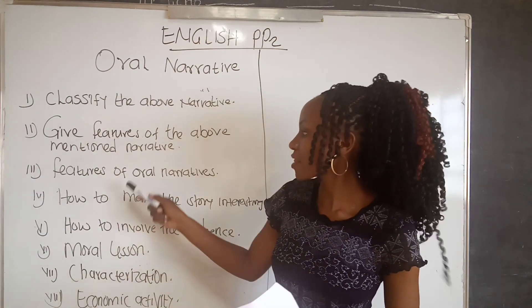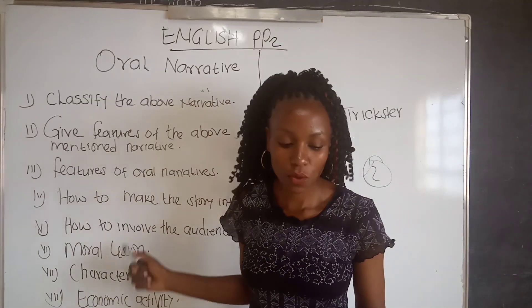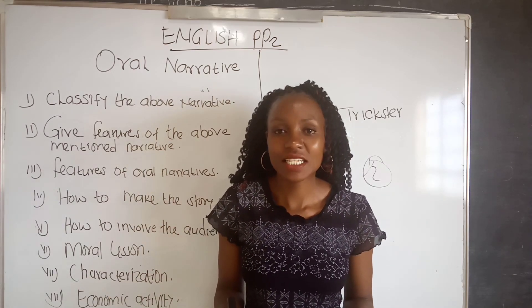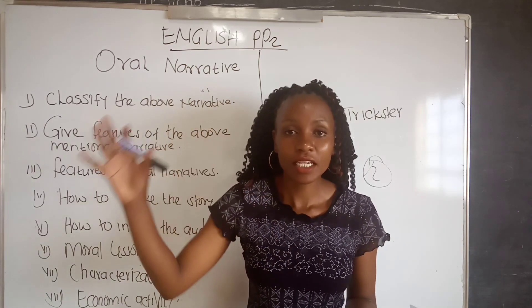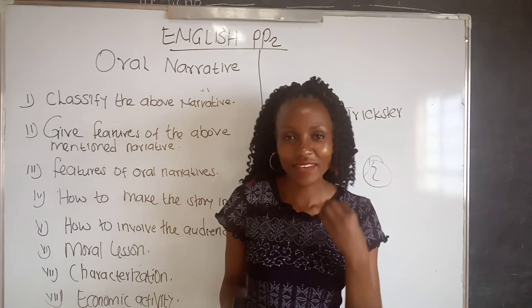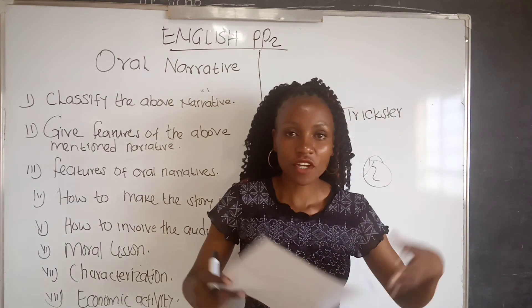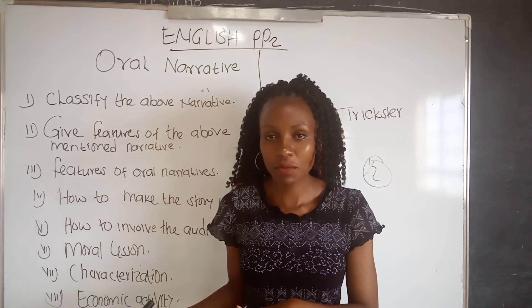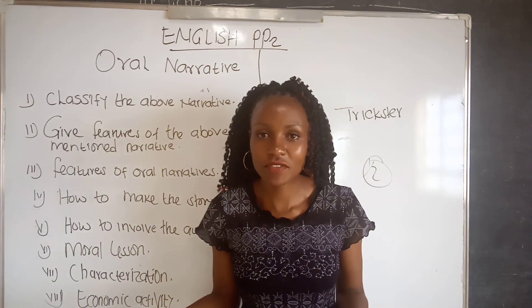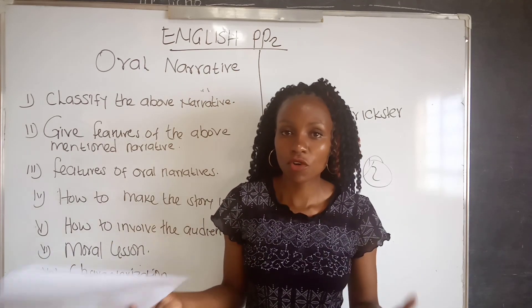Be careful not to confuse the features of oral narrative with the features of the specific narrative mentioned. The next question is: if you were to narrate the above story, how would you make it interesting, or how would you capture the attention of your audience? We use non-verbal cues. We have facial expressions such as smiling and frowning, gestures such as pointing, dramatization whereby you walk like a certain animal or a drunkard, mimicry whereby you imitate the voice of someone or an animal, and body movement, among others.